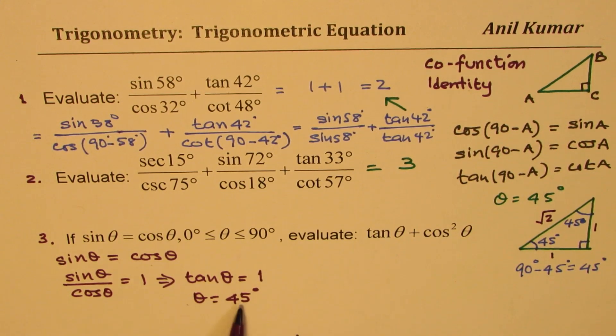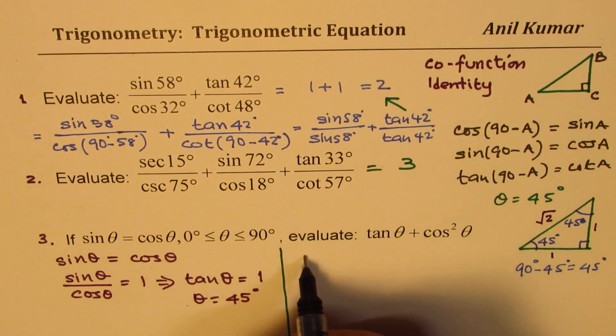So we know theta is 45 degrees. So that is when we are doing it. Now, what do we need to find? So from the given condition, we found that theta is 45 degrees. So when theta is 45, what is cos theta equals to? We need to find what is tan theta plus cos square theta.